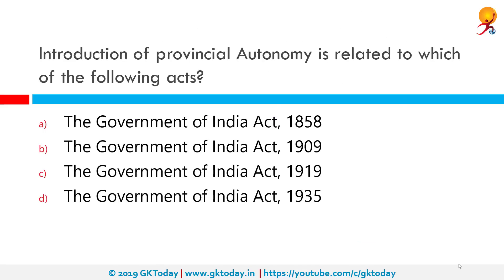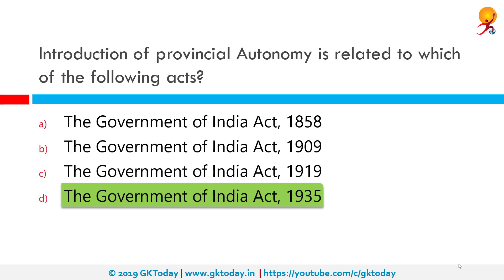Introduction of provincial autonomy is related to which of the following acts? The correct answer is the Government of India Act 1935, the same act based on which elections were held to give Indians representation at provincial levels. Salient features of this act include: abolition of provincial dyarchy and introduction of dyarchy only at the centre, abolition of the Indian Council and introduction of an advisory body in its place, and provision for an all-India federation with British India territories and princely states.